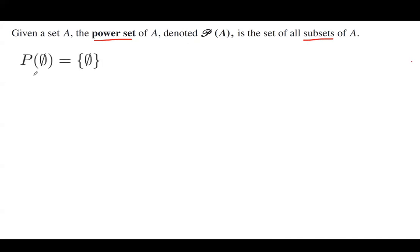The power set of the empty set — if you have the empty set — is the set including the empty set itself. The empty set has only one subset, which is itself.